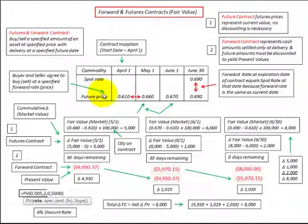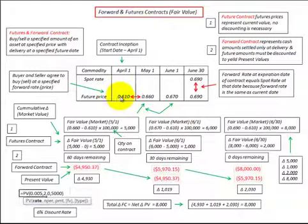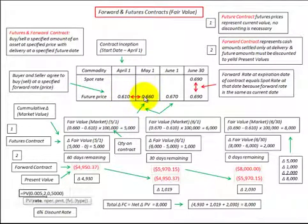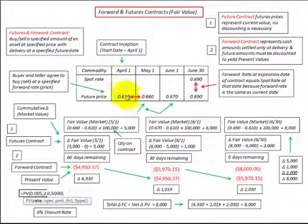To determine any gain or loss on the contract depends on whether you're the buyer or the seller. Looking at our farmer who was selling grain under contract, he would experience the loss because he received less based on the contract price than had he sold the grain at an increased future rate. Looking at our buyer — the cereal manufacturer — he would experience the gain because he paid less for the grain under contract than had he purchased it at an increased future rate.